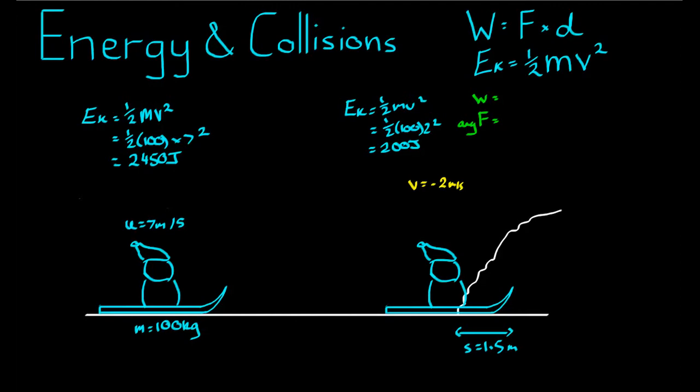The change in kinetic energy between 2450 and 200 is equal to 2250, but that is not the work done by the snow because 2450 joules worth of work was done to bring this sledder to a halt right before he bounced back.